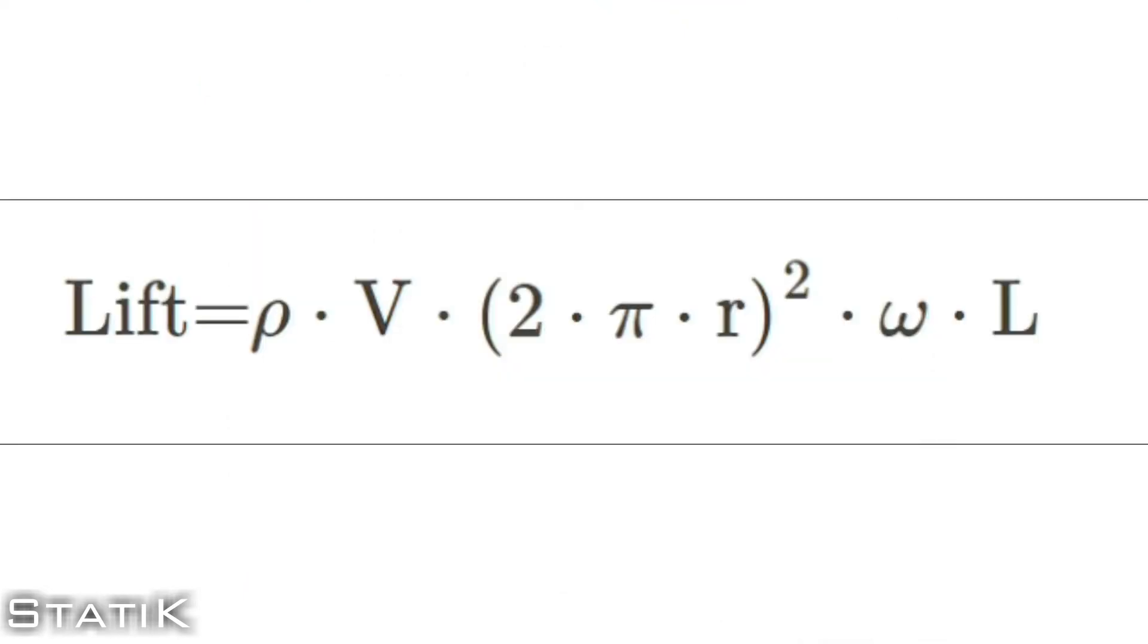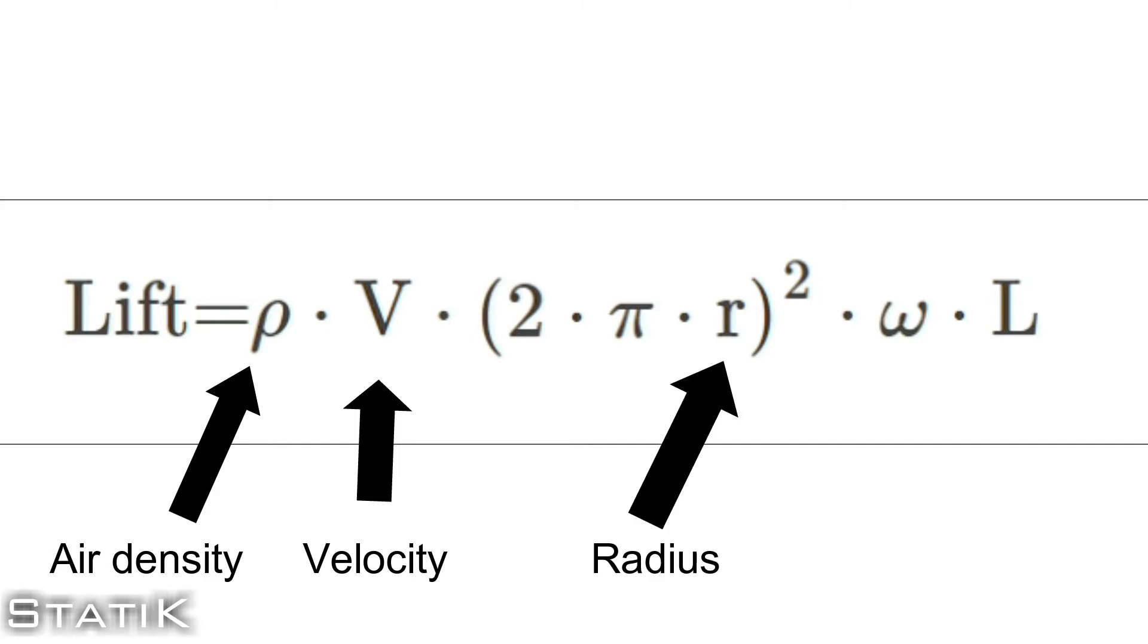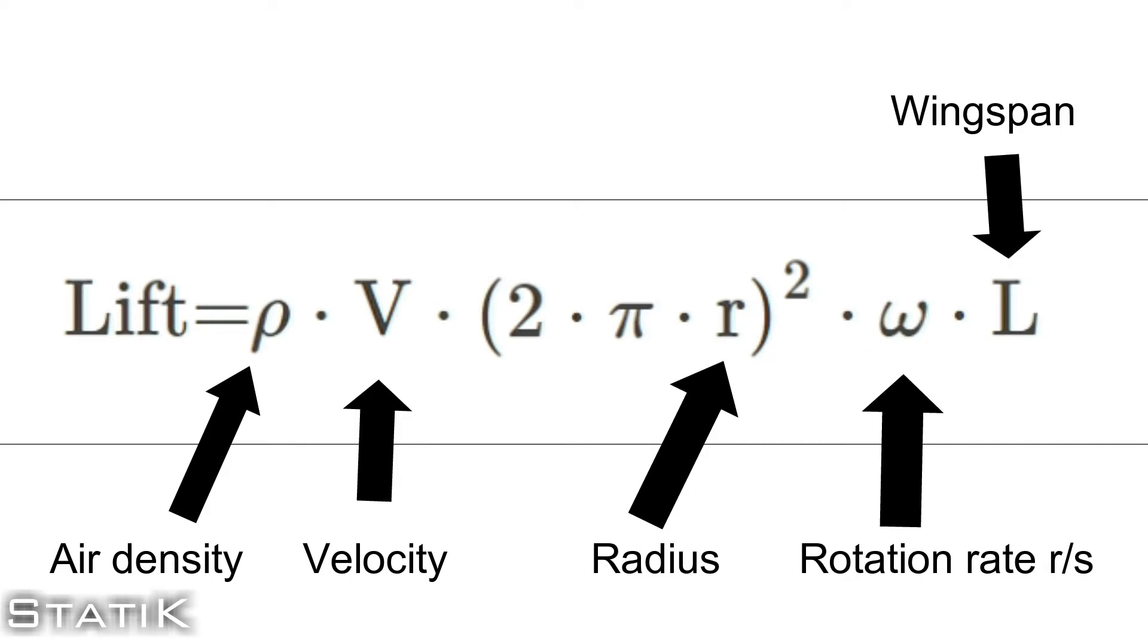It is modeled by this equation right here in order to find the lift. P, or rho, stands for air density. V stands for velocity of the cylinder. R stands for the radius of the cylinder. W, or omega, stands for the rotation rate. And L stands for the length or wingspan of the cylinder.